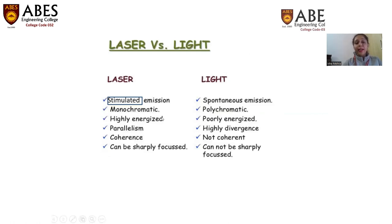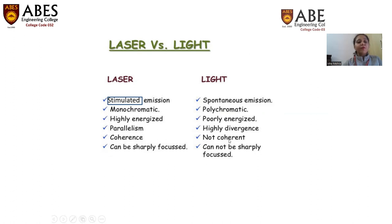The laser light is highly intense because the photons are concentrated at a particular direction, and that is not the case with the normal light source. The laser light source will be highly coherent — all the photons are running with the same phase and same frequency — while in the normal light source, all the photons and light rays are running randomly.